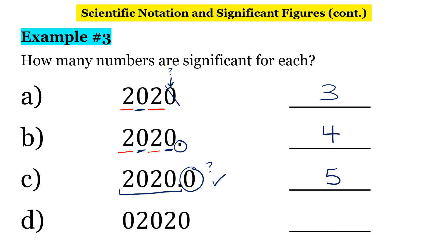This last one is a doozy. We have our non-zero numbers — those count. We have a sandwiched zero — that counts. The zero in front is a leading zero — it doesn't count. And the zero at the end, just like the first example, doesn't count because there's no decimal place. So there are three significant figures in this case. And that, in a nutshell, are the significant figure rules.